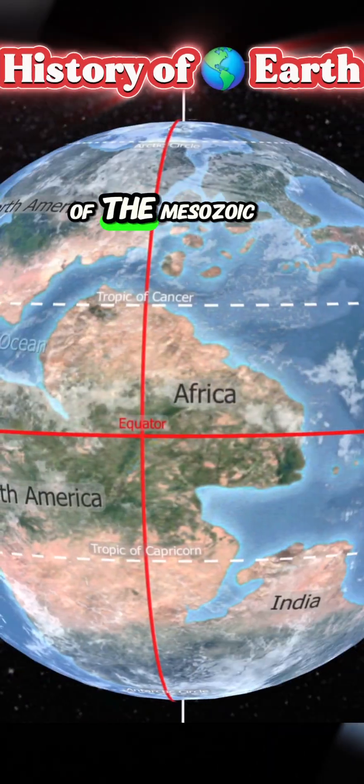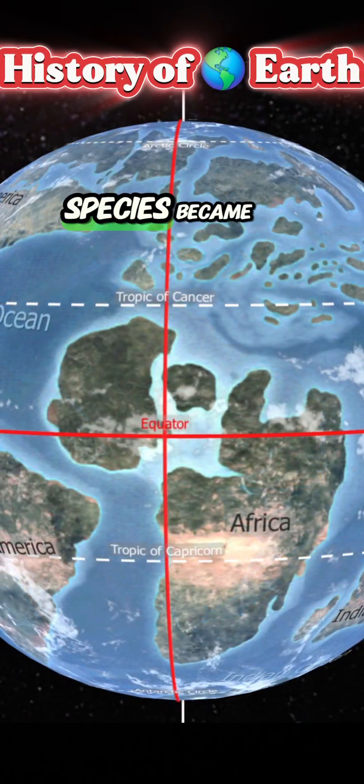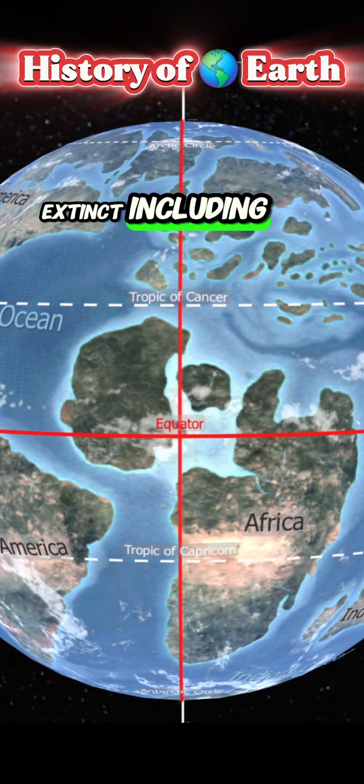At the end of the Mesozoic era, 75% of all species became extinct, including dinosaurs.